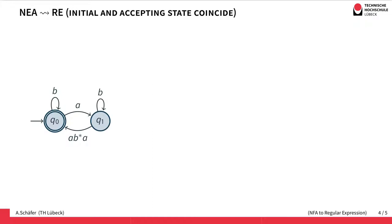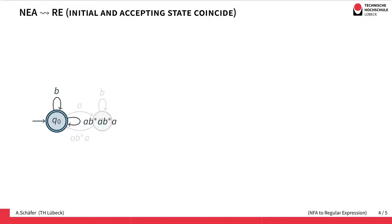Now the initial state and final state coincide, so q1 is neither initial nor final and can be eliminated as well. To go from q0 back to q0 via q1, we take 'a', then an arbitrary number of b's, and back by ab*a. So when we eliminate q1, the regular expression we get is: 'a' to go to q1, b* for the self-loop, and then ab*a to go back to q0.